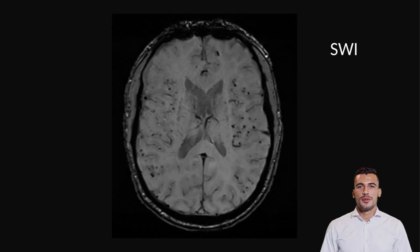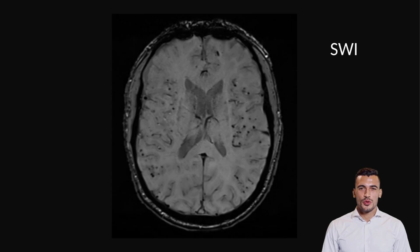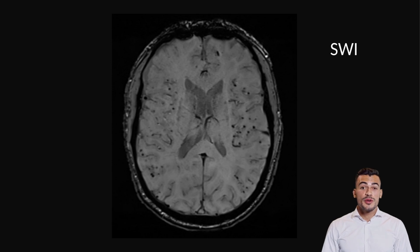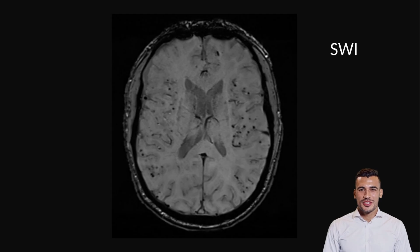Now look at this image from the same patient. Here we see multiple small punctate hypointense foci scattered throughout the brain. This was a case of cerebral amyloid angiopathy showing multiple microhemorrhages which were completely missed on T2 and FLAIR images.